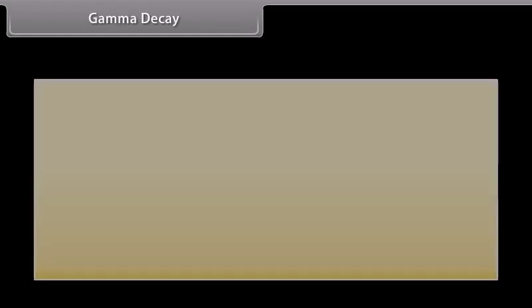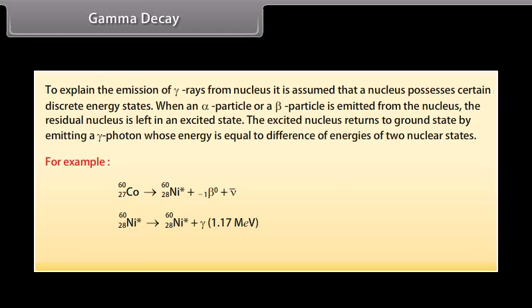Gamma decay: To explain the emission of gamma rays from nucleus, it is assumed that a nucleus possesses certain discrete energy states. When an alpha particle or a beta particle is emitted from the nucleus, the residual nucleus is left in an excited state. The excited nucleus returns to ground state by emitting a gamma photon whose energy is equal to difference of energies of two nucleus states. For example, cobalt nucleus with mass number 60 and atomic number 27 transforms into nickel nucleus with mass number 60 and atomic number 28 in its excited state. The excited nickel nucleus with mass number 60 and atomic number 28 returns into ground state by emission of two successive gamma photons of energies 1.17 MeV and 1.33 MeV.